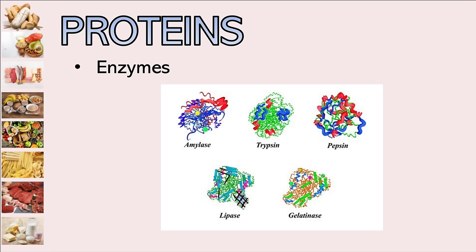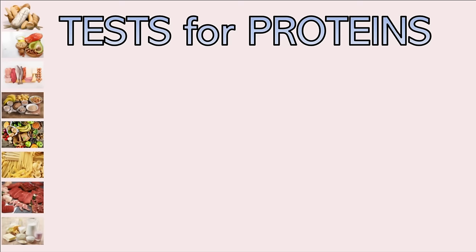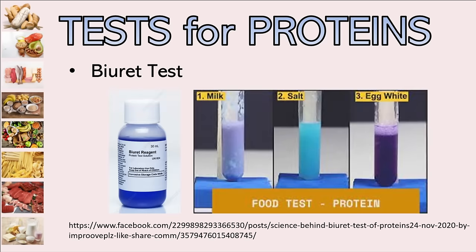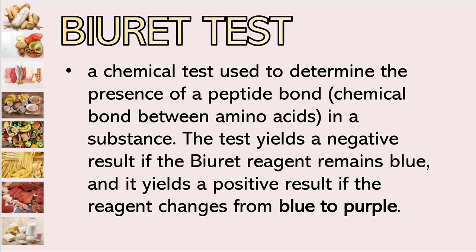To test for proteins, we have what is called the Biuret test. This test is used to determine the presence of a peptide bond — a bond between amino acids. The reagent is blue, and if it changes from blue to purple, that means the food tests positive for protein.